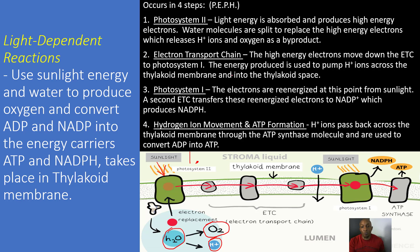Step two is our electron transport chain. This is where the high-energy electrons move down the electron transport chain to Photosystem I. Notice how they move down this electron transport chain. The energy produced is used to pump hydrogen ions across the thylakoid membrane and into the thylakoid space.